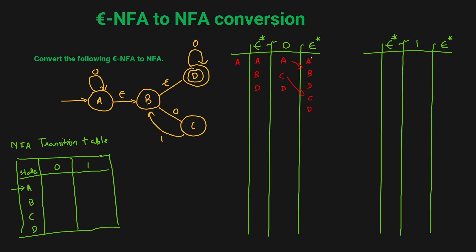When we take the union of all these states — A, B, D, C, D — we get four states: A, B, C, D. So let's write that down for input 0: A, B, C, D. This is how we convert an ENFA to NFA. Now we have done it for input 0, and now we'll similarly check for state A on input 1.